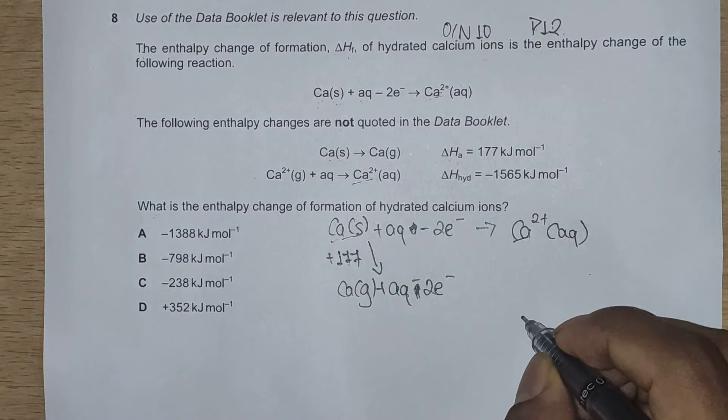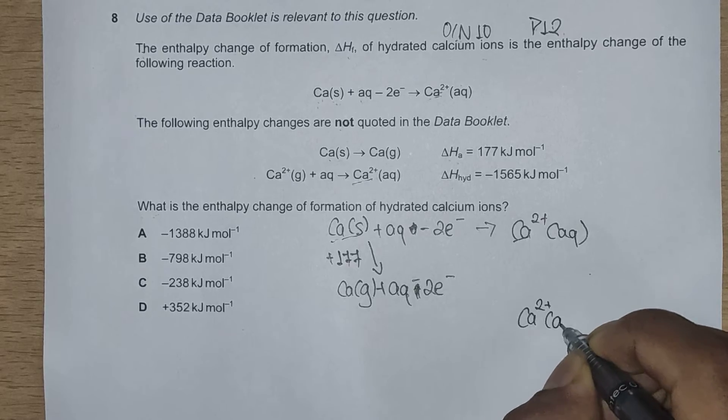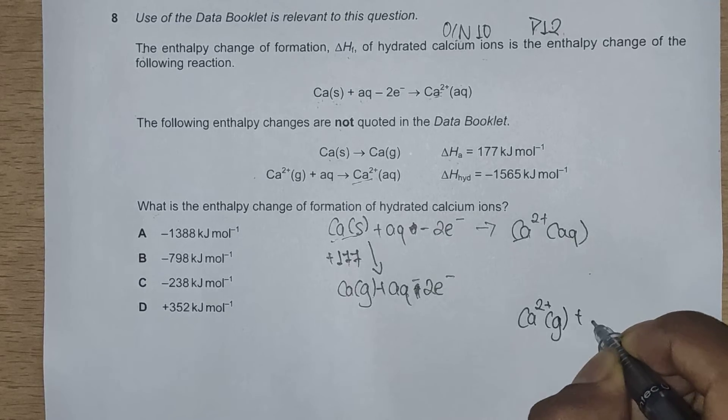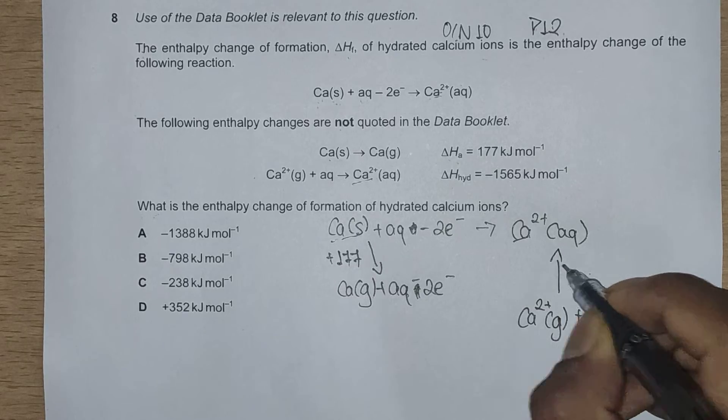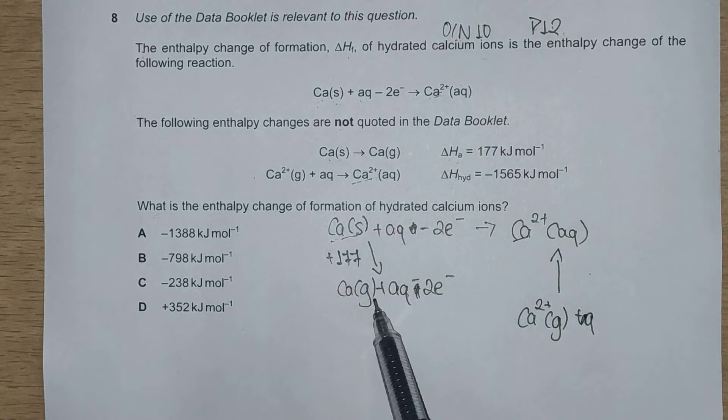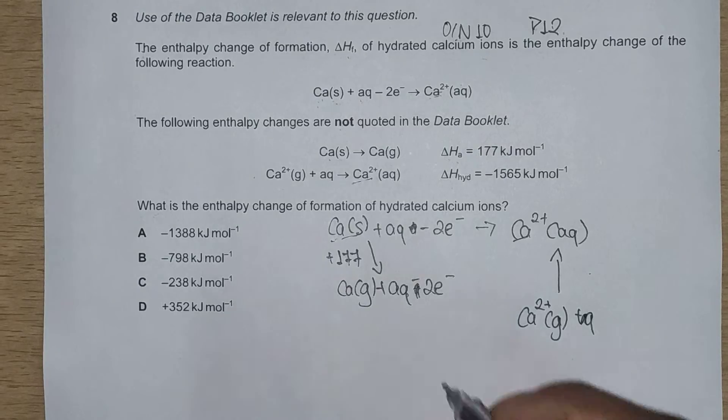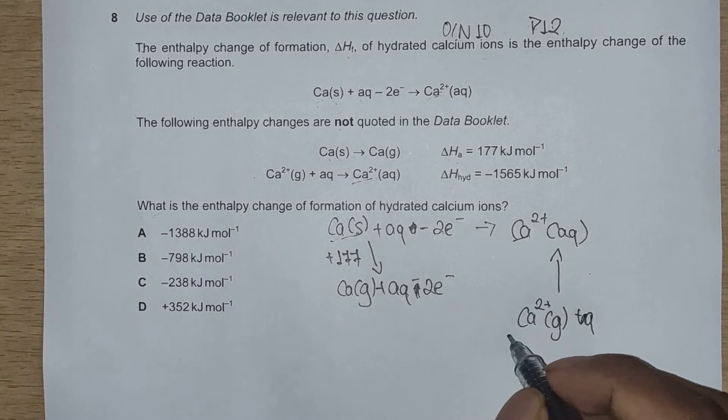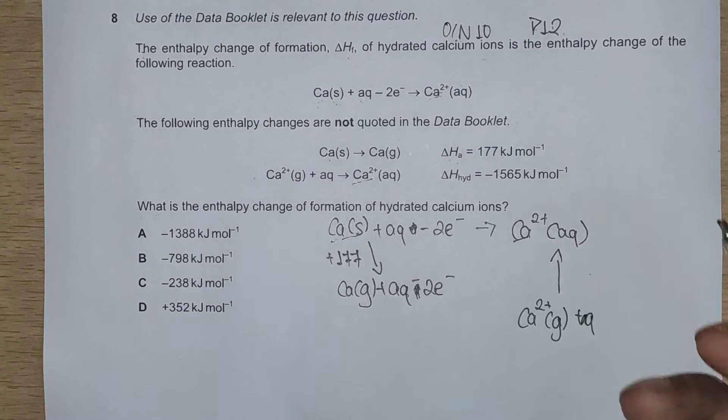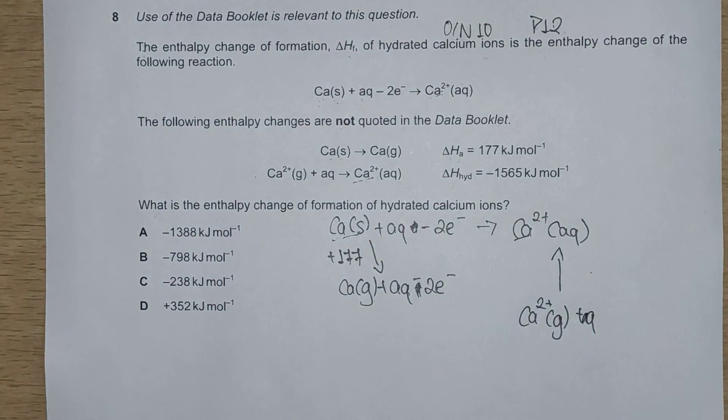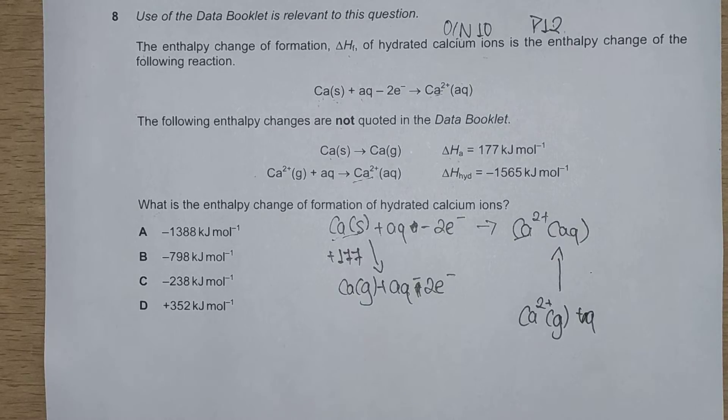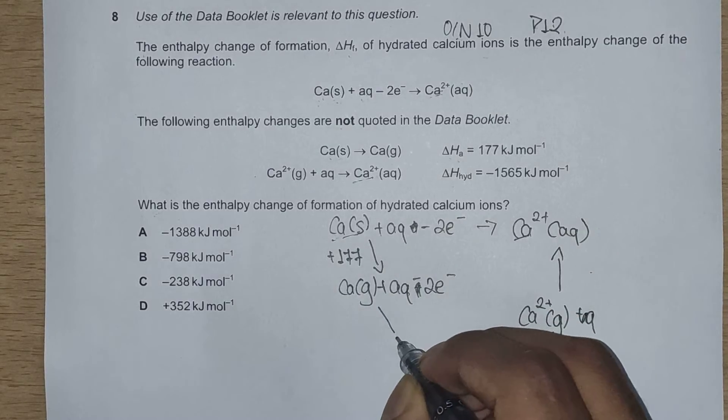we'll be using this value here: Ca 2+ aqueous to gas plus aqueous, and this arrow goes upwards. Now the bridge between these two, there's something missing here, and that is the first and second ionization energy of calcium.